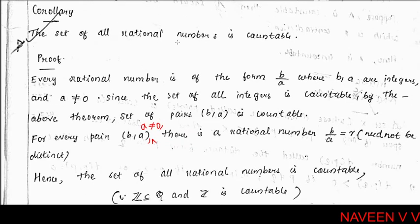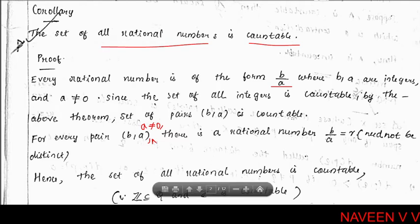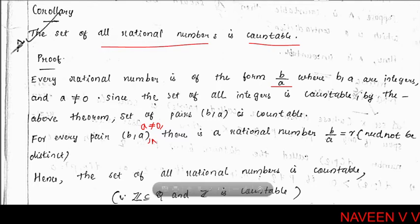Corollary: The set of all rational numbers is countable. Every rational number can be expressed in the form b/a where a and b are integers and a is not equal to zero. The set of all integers is a countable set. So using the above result, the set of all 2-tuples (ordered pairs) (b, a) is a countable set.